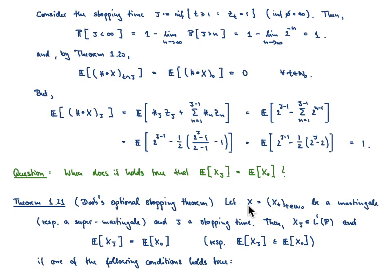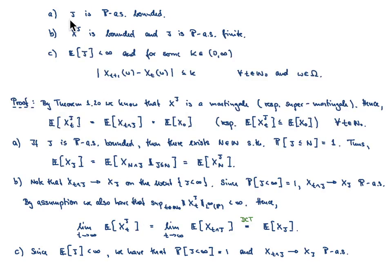This leads to Doob's optional stopping theorem: sufficient conditions under which the expectation of a stopped martingale equals the expectation at time 0. Given a martingale X and stopping time τ, the process X^τ is in L^1 and E[X_τ] = E[X_0] if one of these three conditions holds: (1) τ is P-a.s. bounded; (2) the stopped process is bounded and τ is P-a.s. finite; or (3) E[τ] is finite and the increments of X are bounded by a constant k for all t and ω.